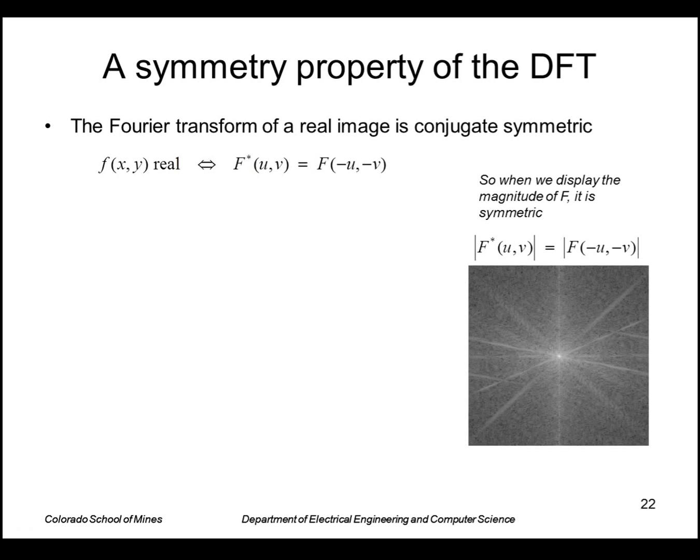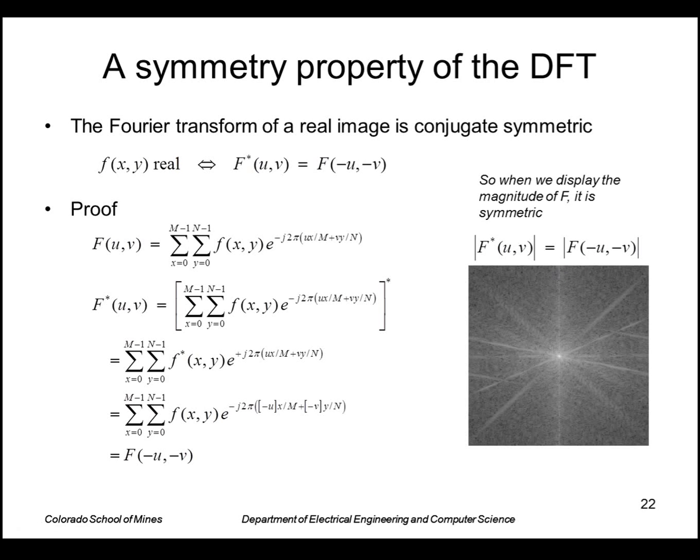Some properties of the discrete Fourier transform: one is, as we've kind of seen already, that the spectra look very symmetrical, and that comes from the fact that a real function f(x,y) yields a transform that is symmetrical. The complex conjugate is symmetrical, so the complex conjugate of F at (u,v) equals F at (-u,-v). Of course, when you take the absolute value they're equal, and this is the proof of that.